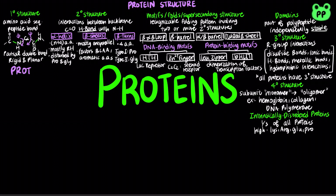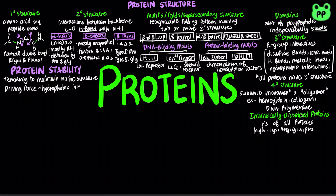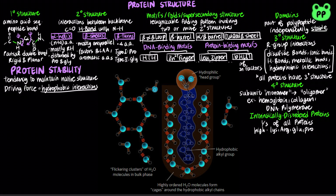Protein stability can be defined as the tendency to maintain a native conformation, meaning their functional folded conformations. Protein structure is mainly stabilized by hydrophobic interactions. When water surrounds a hydrophobic molecule, the optimal arrangement of hydrogen bonds results in a highly structured shell, known as the solvation layer of water molecules, which results in an unfavorable decrease in entropy of the water.